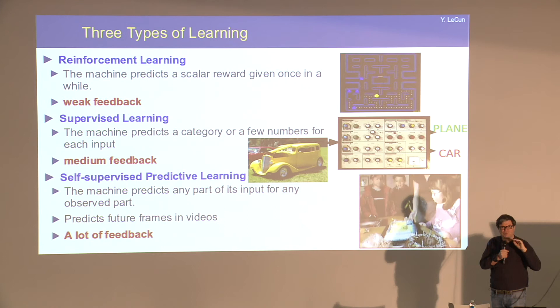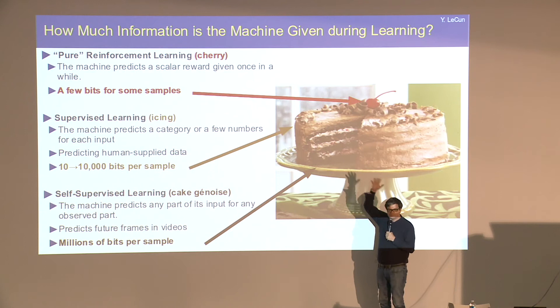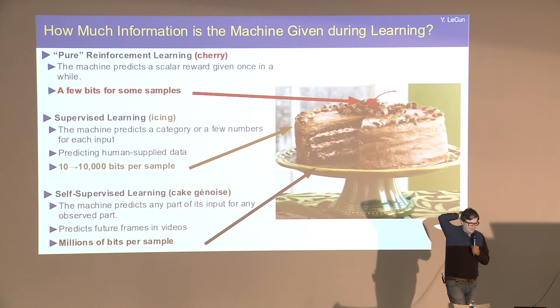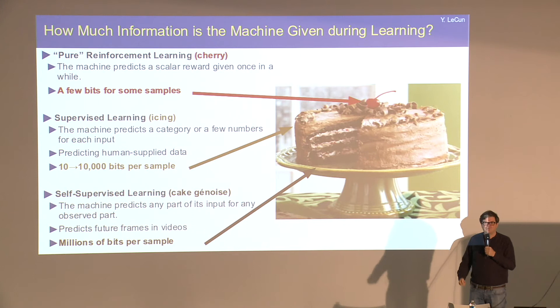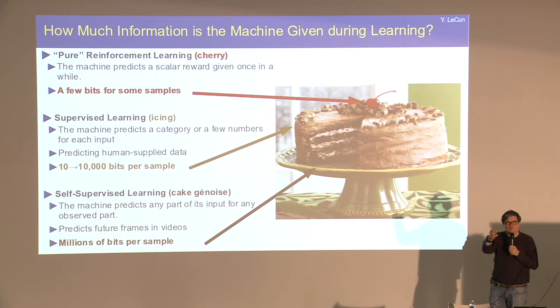That led to the analogy of intelligence as a cake. If self-supervised learning is the bulk of the cake, machine learning is in the same embarrassing situation as physics — physicists have no idea what 95% of the mass in the universe is: dark matter and dark energy. We can make the cherry and the icing on the cake, but we can't actually bake the cake.